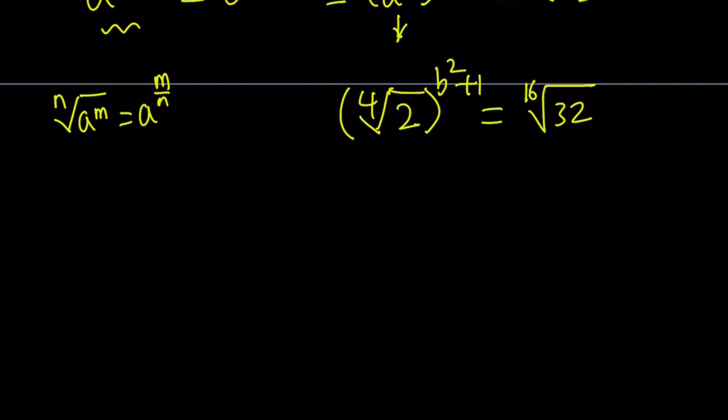But anyways, we can go ahead and write this as 2 to the power 1 fourth, and then raise it to the power b squared plus 1, and then write this as 2 to the power 5, and then raise it to the power 1 over 16, right? You can kind of write it like this. Now, why are they different? Because we have a power on the outside, so I left it outside. But in the second case, we have a power inside the radical, so I kept it inside the radical. Make sense?